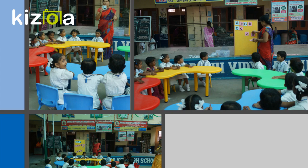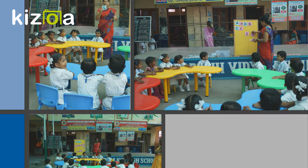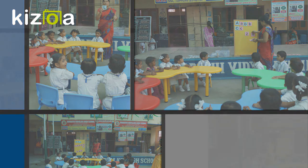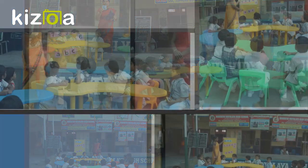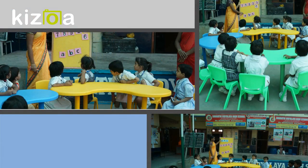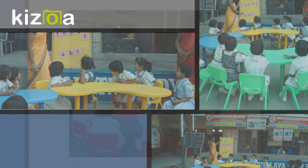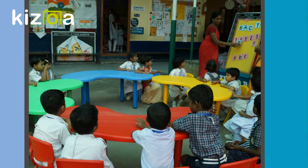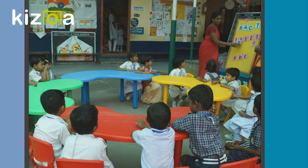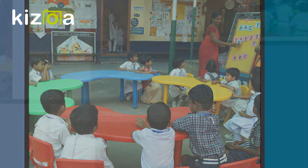E is for elephant, e-e-elephant. F is for fish, f-f-fish. G is for gorilla, g-g-gorilla. H is for hat, ha-ha-hat.